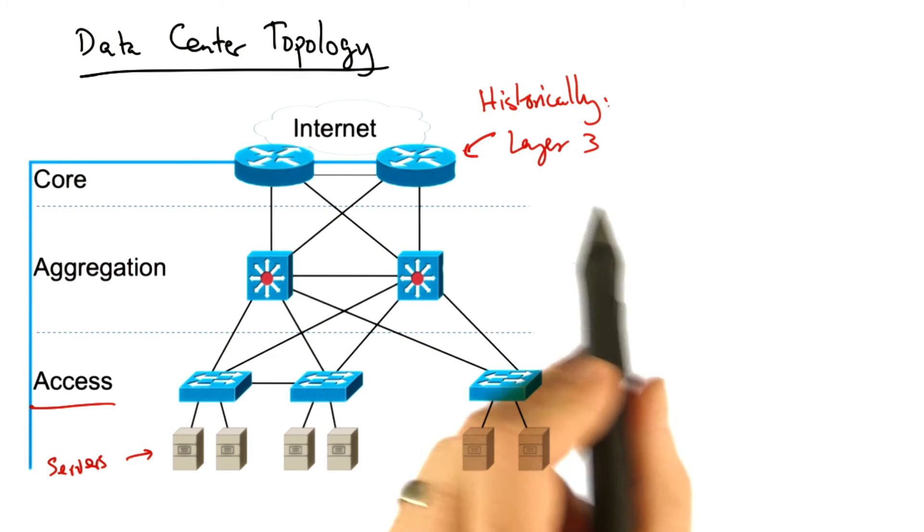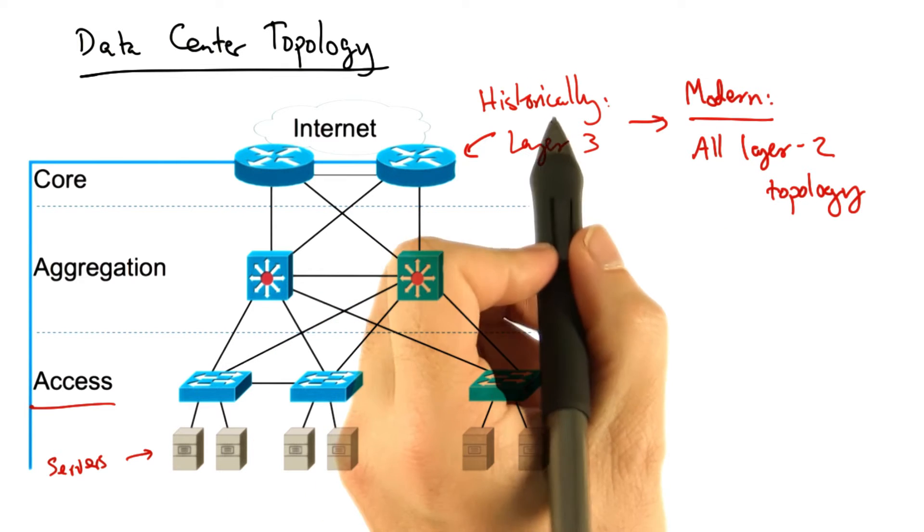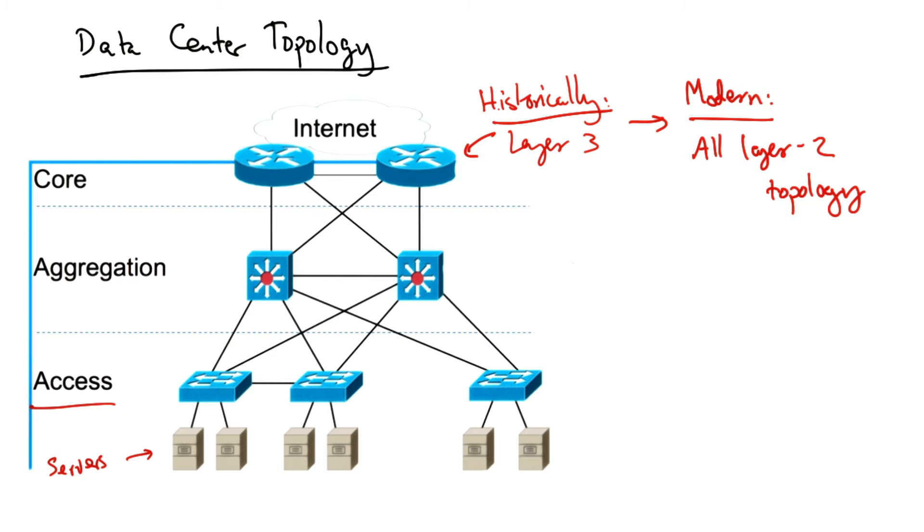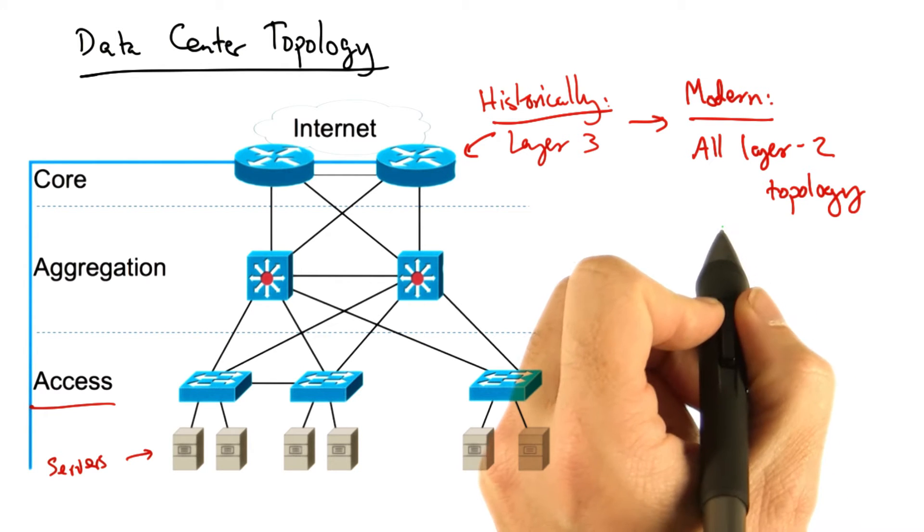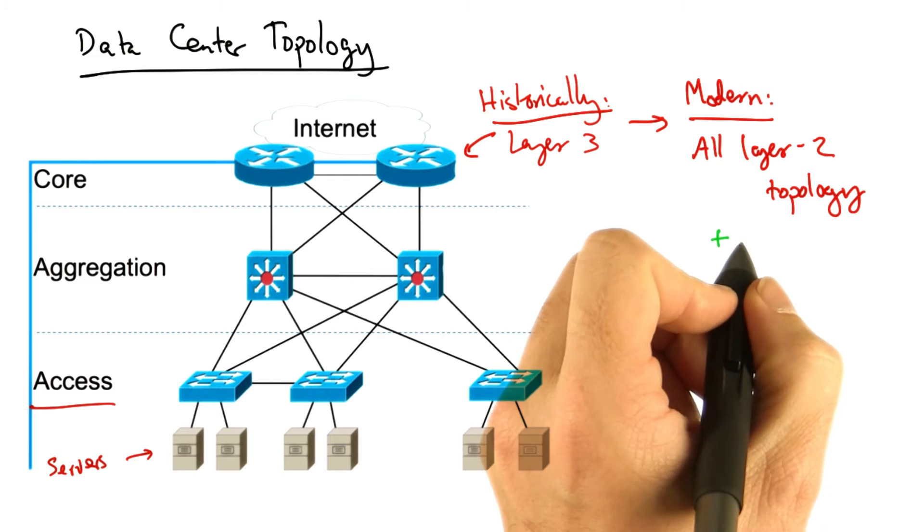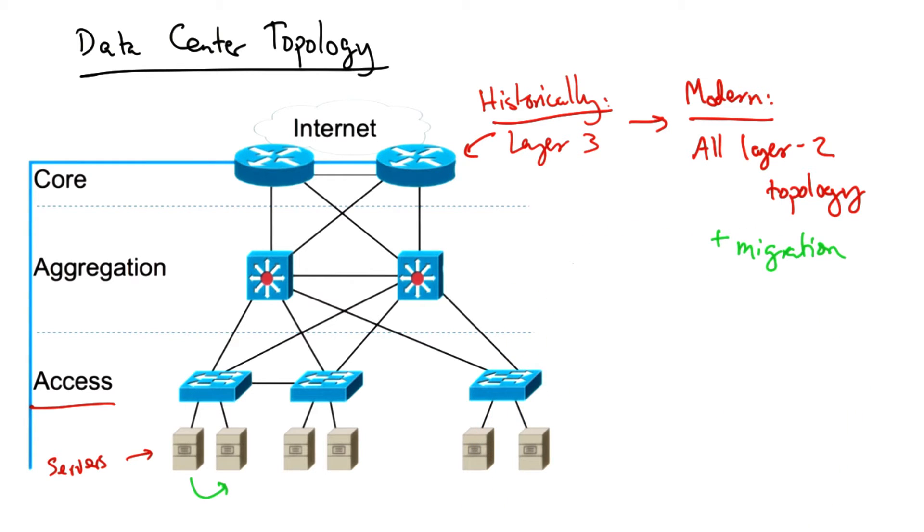Historically, the core of the network has been connected with layer three. Increasingly, modern data centers are connected with an entire layer two topology. A layer two topology makes it easier to perform migration of services from one part of the topology to another, since these services can stay on the same layer two network and hence would not need new IP addresses when they moved. It also becomes easier to load balance traffic.